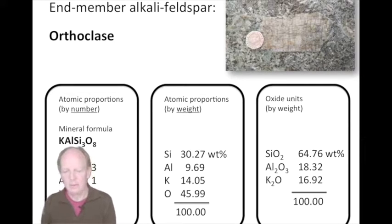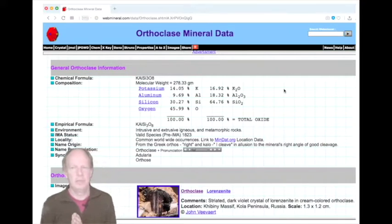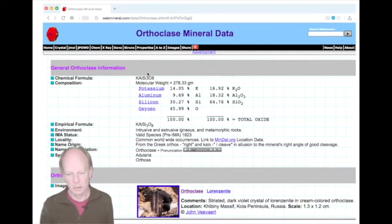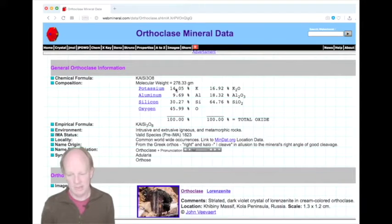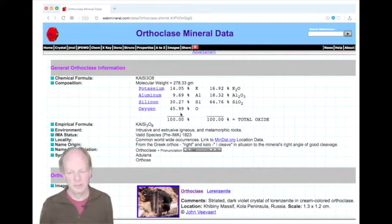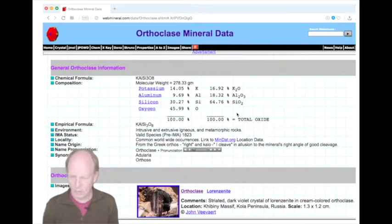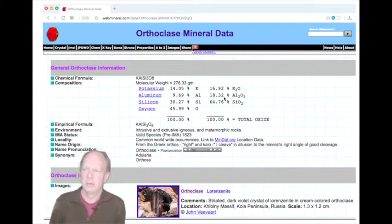Here's a website I use a lot — WebMineral — which has all the data including chemical data on minerals, and you can see all three representations there. For orthoclase, we have the mineral formula, the weight percentages of the individual atoms — potassium, aluminium, silicon, and oxygen — adding up to 100, and also the representation in terms of oxides: K₂O, Al₂O₃, SiO₂, also adding up to 100.